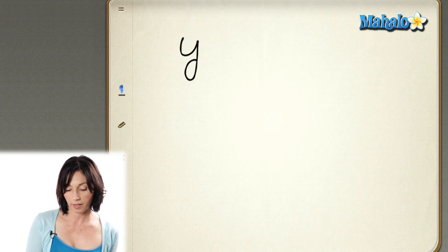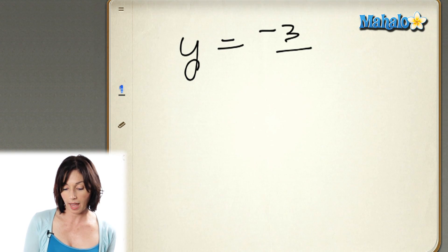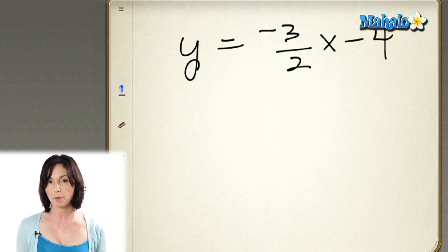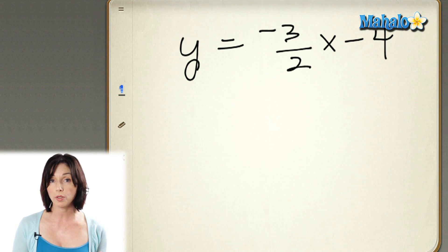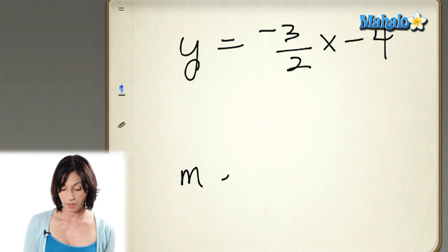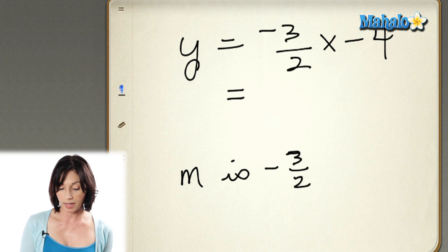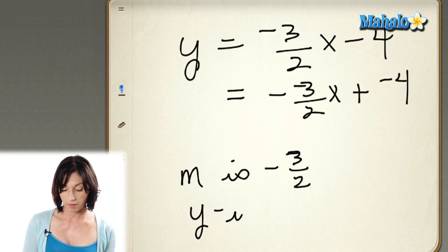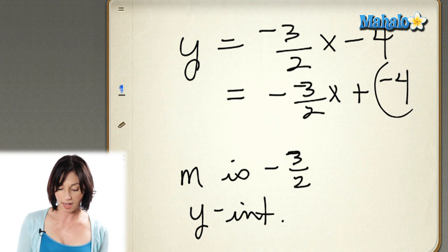Suppose we have y equals negative 3 halves x minus 4. It's the exact same thing. Even though we have negative values here, we don't need to worry about that. The slope is the value that's multiplying the independent variable x, so in this case the slope m is negative 3 halves. If you're a little confused about what the y-intercept is, don't forget we could rewrite this equation as y equals negative 3 halves x plus negative 4. That means our y-intercept — the b in the standard form — is negative 4. So don't let the pluses and minuses throw you off: if you're subtracting, that means your b is a negative number.